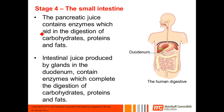In the pancreatic juice you have enzymes which digest carbohydrates, proteins, and fats — we'll talk more about these specific enzymes later. As the chyme travels further down the small intestine, more intestinal juice is produced by glands in the duodenum, completing the digestion of carbohydrates, proteins, and fats. When you first eat food, the food molecules are huge and cannot be absorbed. They break down step by step into smaller and smaller molecules.